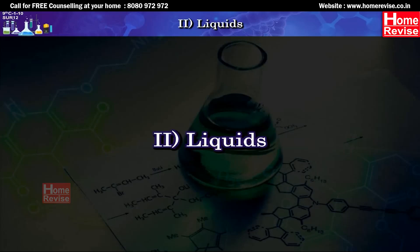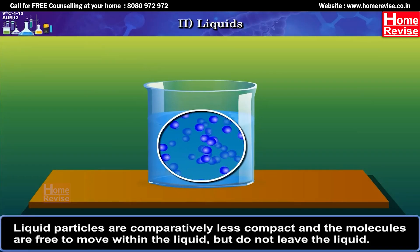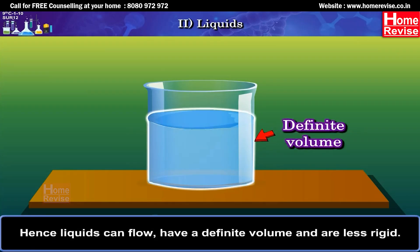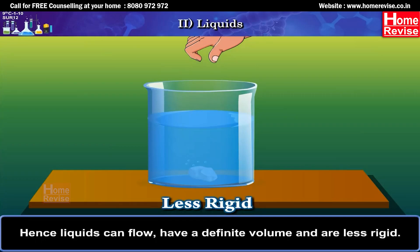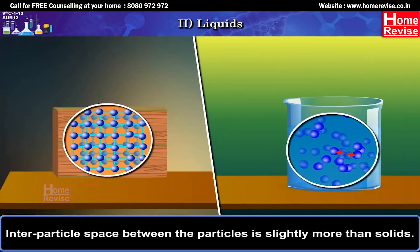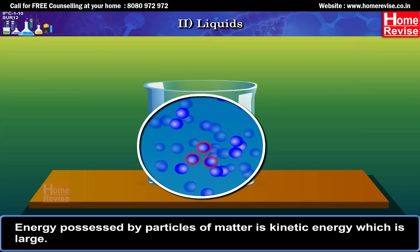Second, liquids: Liquid particles are comparatively less compact and the molecules are free to move within the liquid, but do not leave the liquid. Hence, liquids can flow, have a definite volume and are less rigid. Interparticle space between the particles is slightly more than in solids. Interparticle attraction is less compared to solids. Kinetic energy of liquid particles is large.